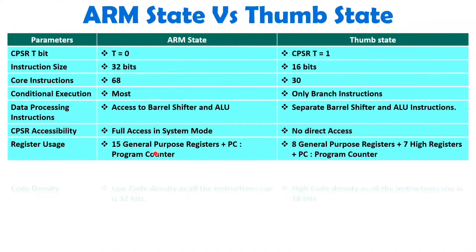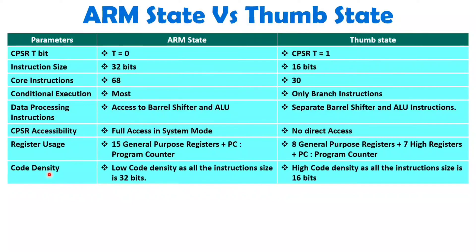When we talk about code density, since instruction size is 32 bits in ARM state, you will have low code density. With Thumb state, instruction size is 16 bits, so high code density will be there with Thumb state.